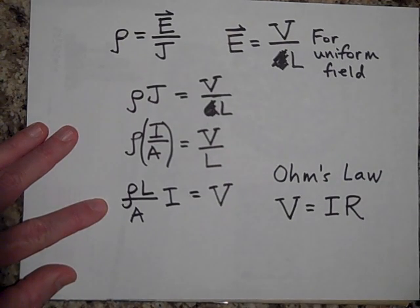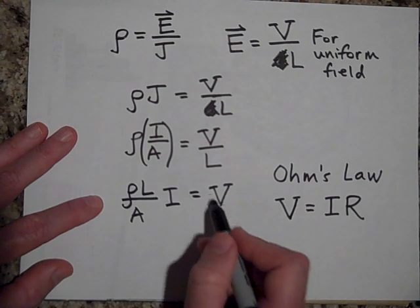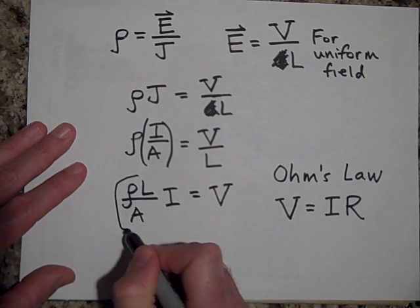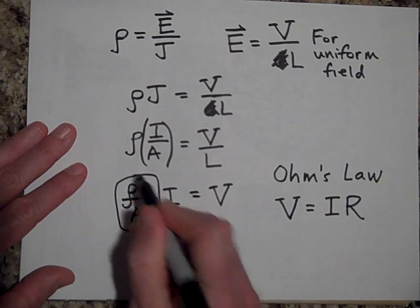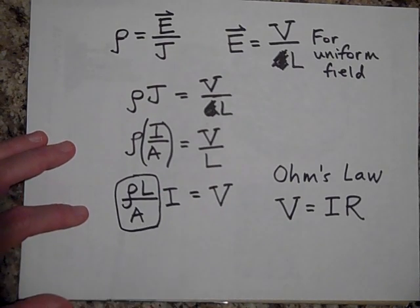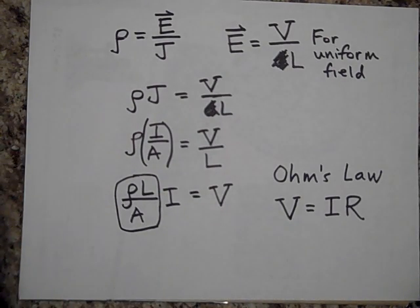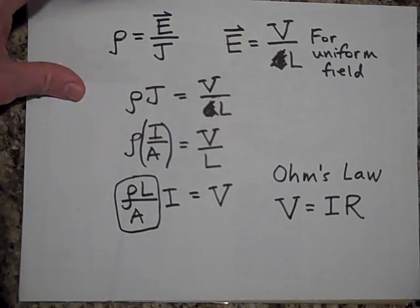Well, the voltage is equal to I times R. So here's the deal: this is R. That expression ρL over A is R.